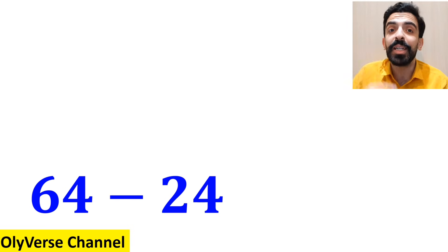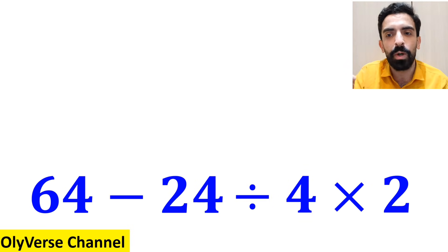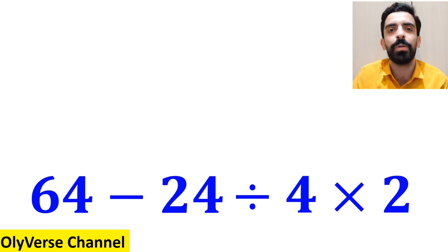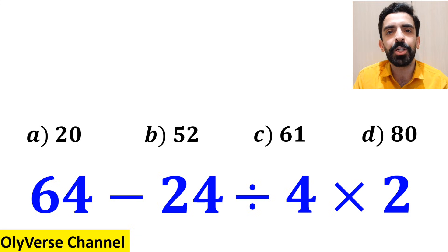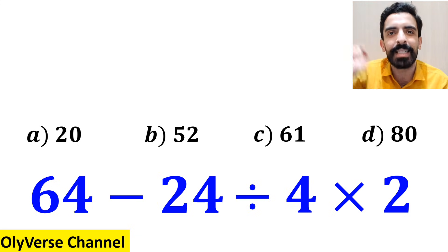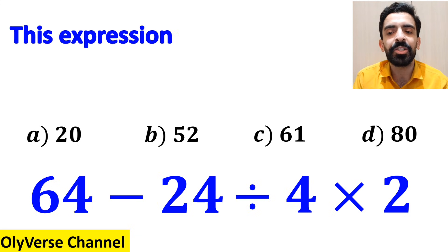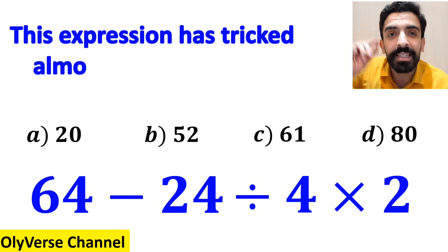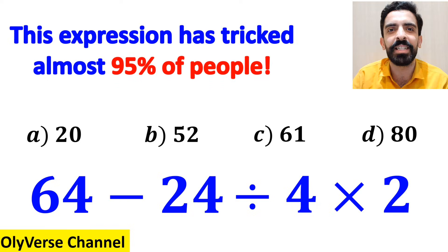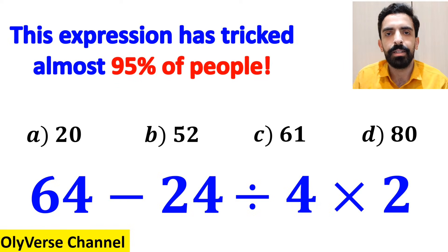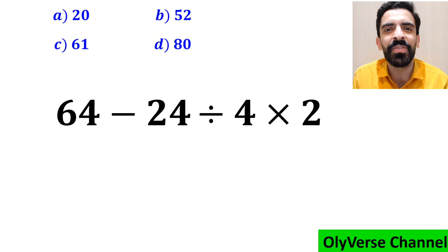What is the value of the expression 64 minus 24 divided by 4 times 2? Which option do you think is the correct answer to this question? This expression has tricked almost 95% of people. Let's go step by step and solve it together.